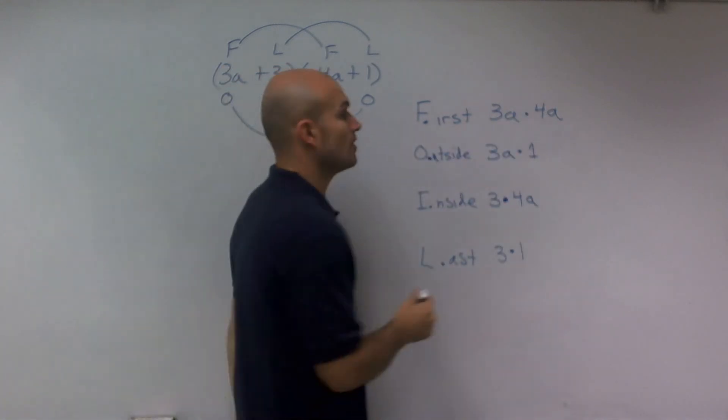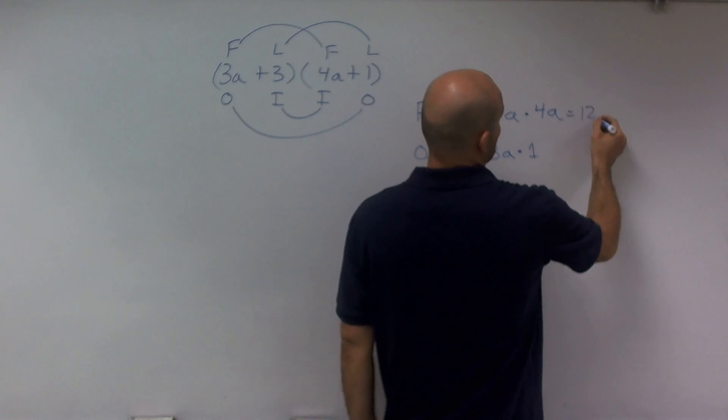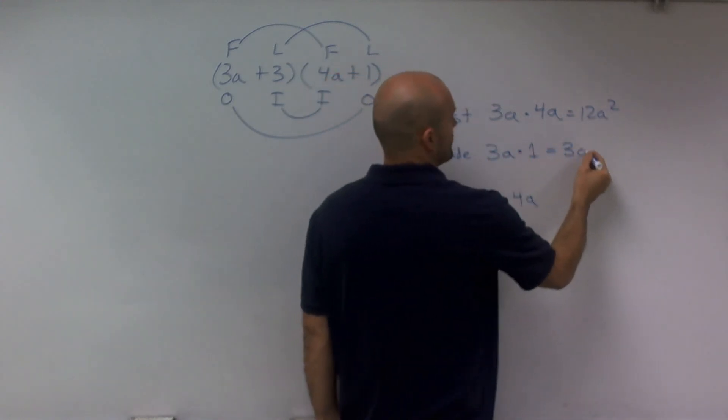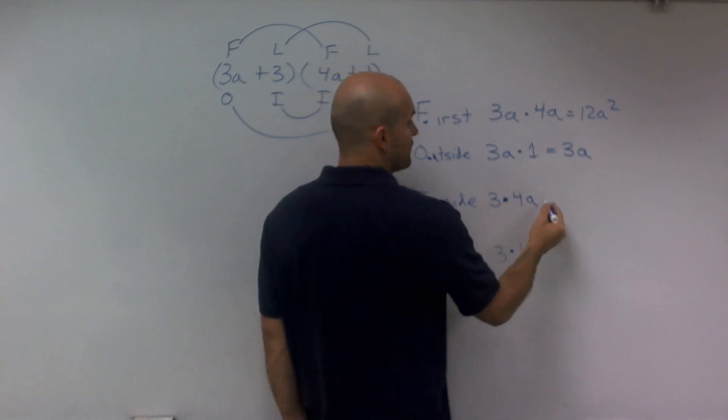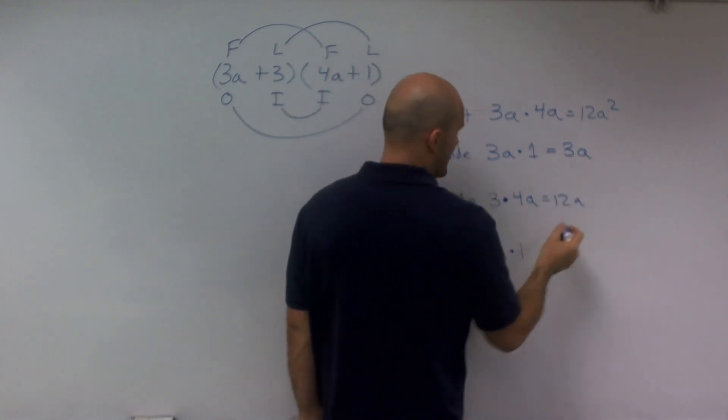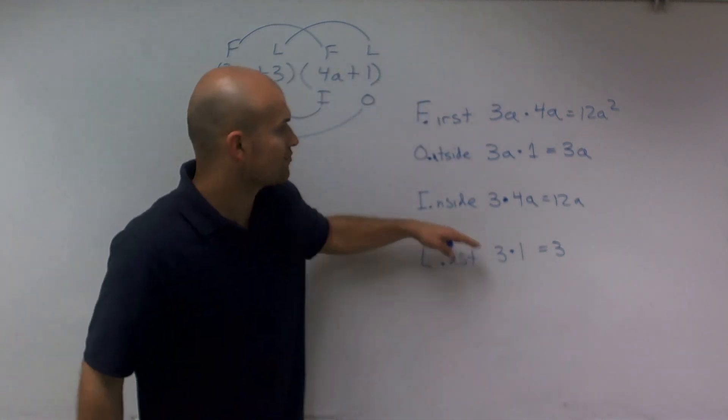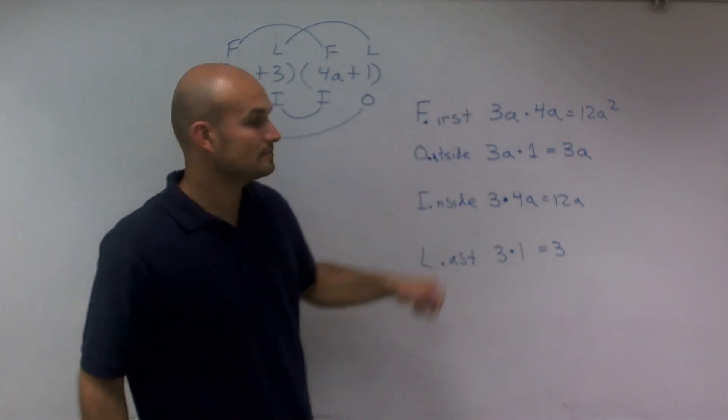So now the next thing that I need to do is I just need to multiply each of these terms. So 3a times 4a is going to equal 12a squared. 3a times 1 equals 3a. 3 times 4a equals 12a. And 3 times 1 equals 3. So that is the product of each of my four products.